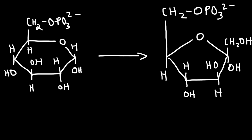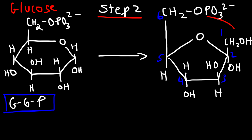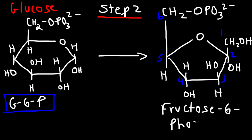Step 2 of glycolysis: on the left we have glucose-6-phosphate (G6P). The phosphate group is still on carbon 6. Now we don't have a glucose base unit — glucose has a 6-membered ring, but fructose has a 5-membered ring. So the name of this molecule is fructose-6-phosphate, because we still have the phosphate group on carbon 6.